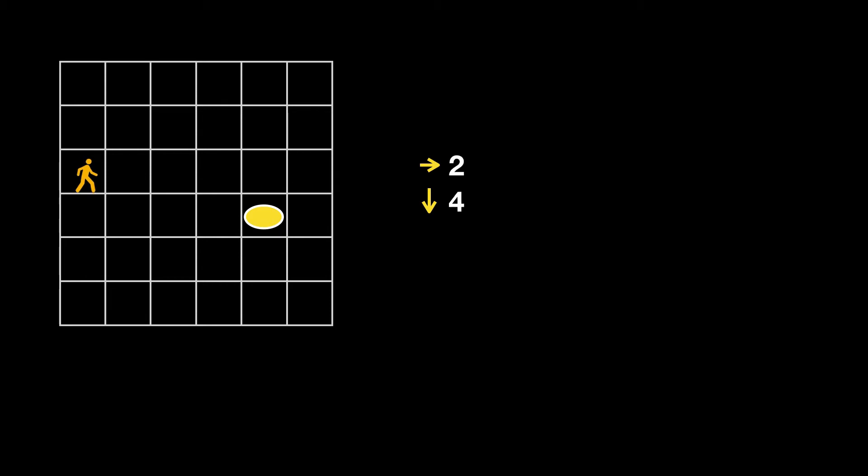When he walks like this, his coordinate is now 2, 4. And then at 3, 5 like this, third square from the left, fifth square from the top.